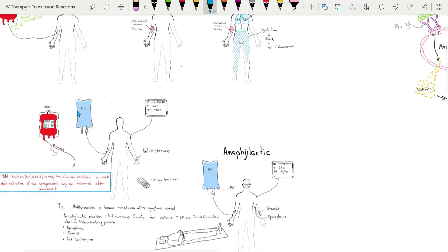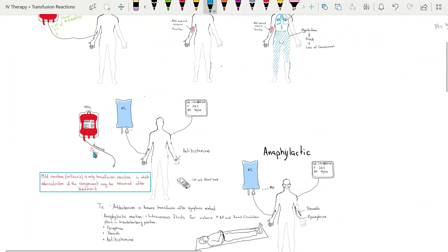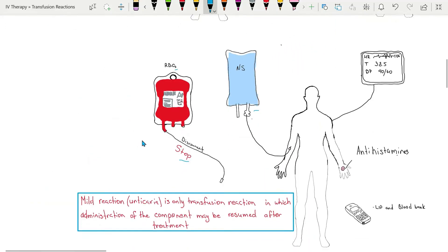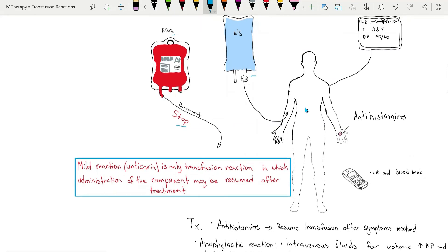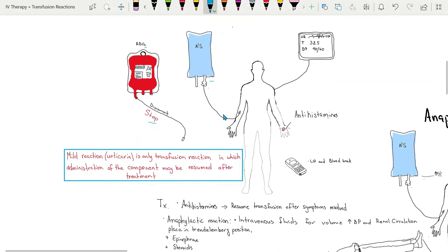Interventions that would need to be done when an allergic reaction has occurred: stop the transfusion, keep the vein open with a new bag of normal saline, notify the licensed independent practitioner, and monitor vital signs.